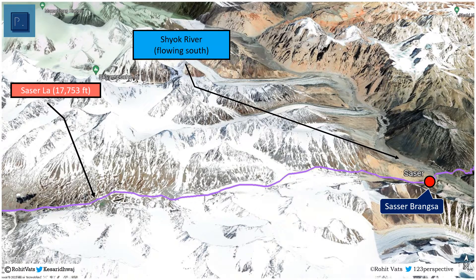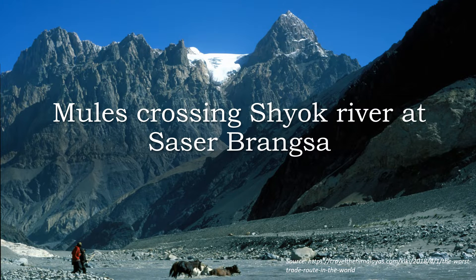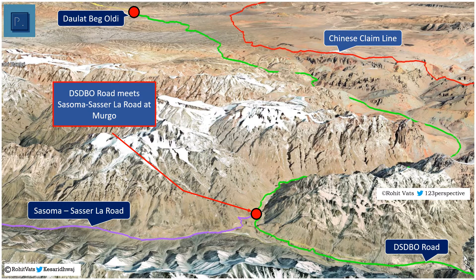After crossing the Saser La pass, the road descends towards the Shayok river and reaches Sasar Brangsa, located on its western bank. The road then crosses over the Shayok river towards the eastern side and enters the gorge which takes it first towards Chongtash and then Margo. This is an image of mules crossing the Shayok river at Sasar Brangsa. At Margo, this new road meets the DS-DBO road coming from the south along the Shayok river, from where there is a common road towards DBO and the Karakoram pass.